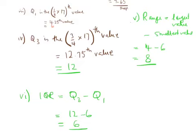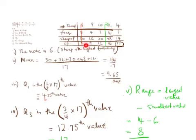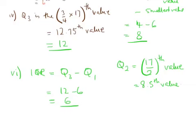The only other thing we could have been asked is the median. Q2 is the 17 over 2 value. 17 over 2 is 8.5, so it's the 8.5th value. Walking along the cumulative frequency, 8.5 lives between 9 and 12, so going up and along gives us 9. Q2, which is of course also called the median, is 9.